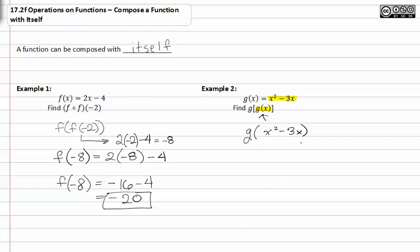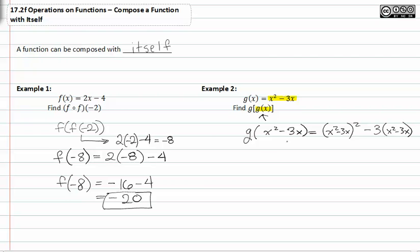Now we need to find g of x. Wherever there was an x, we put an empty space for x squared minus three x. It's helpful to do it in two separate steps: if we know g of x is equal to x squared minus three x, rewrite it, and then write out the function leaving empty spaces for what we're going to place inside.